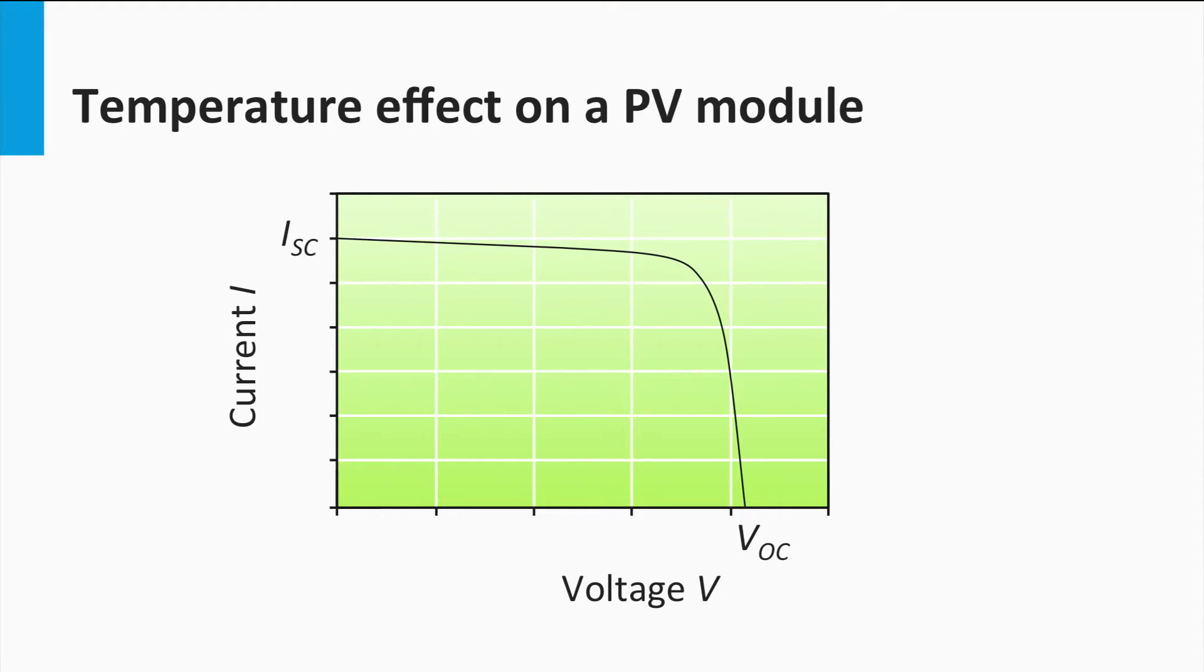In this graph you see the I-V curve of a PV module at a given irradiance and temperature. Now if the temperature increases while the irradiance is constant, we see an I-V curve that looks like this. So we see that while the current has very minorly increased, there is a significant drop in voltage. This means that the overall power output has decreased.